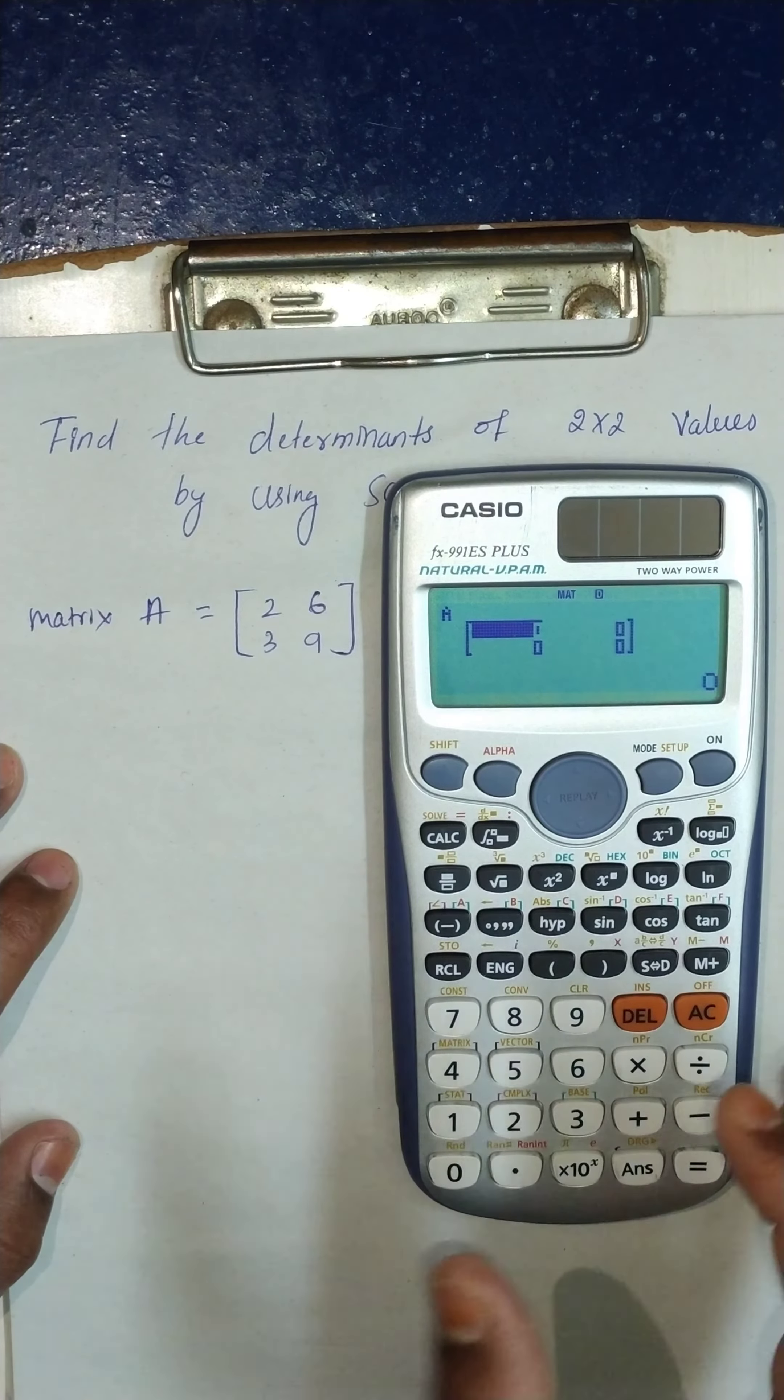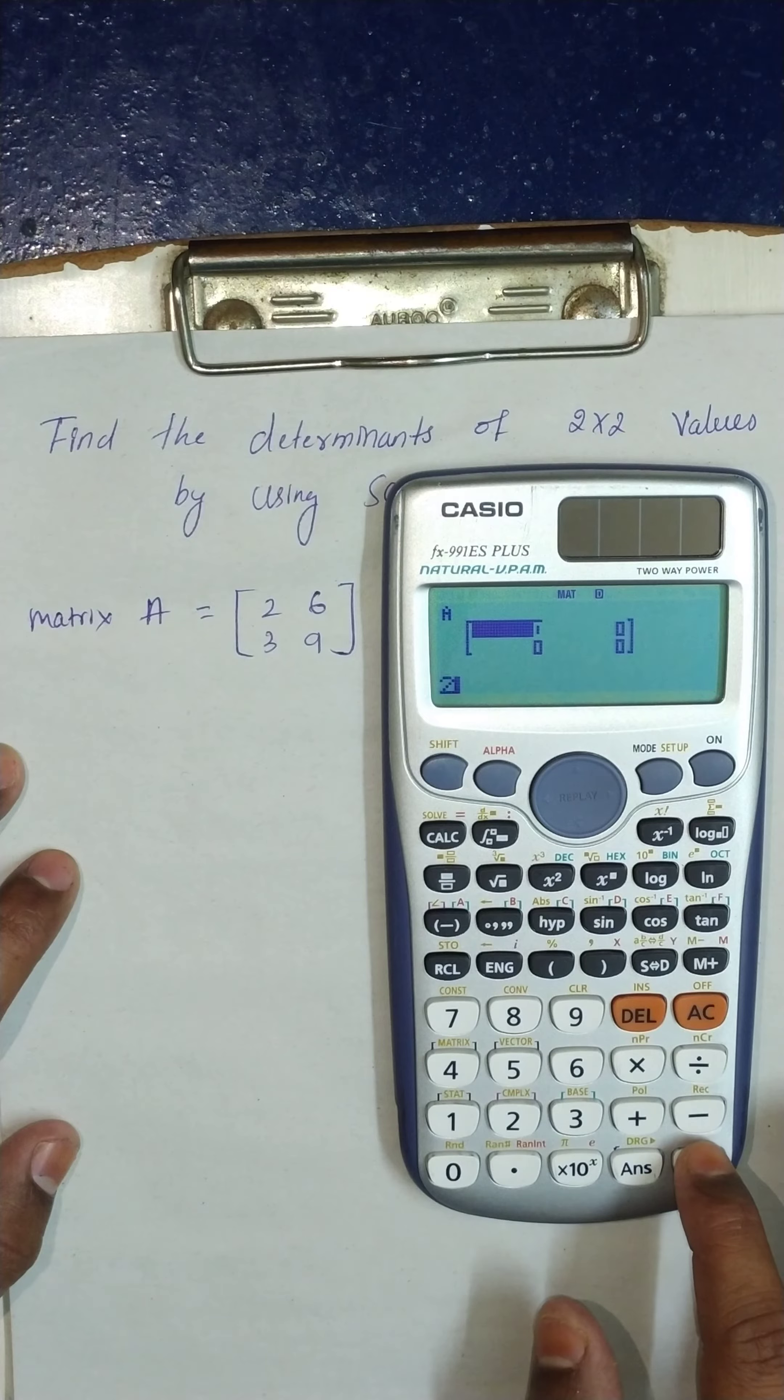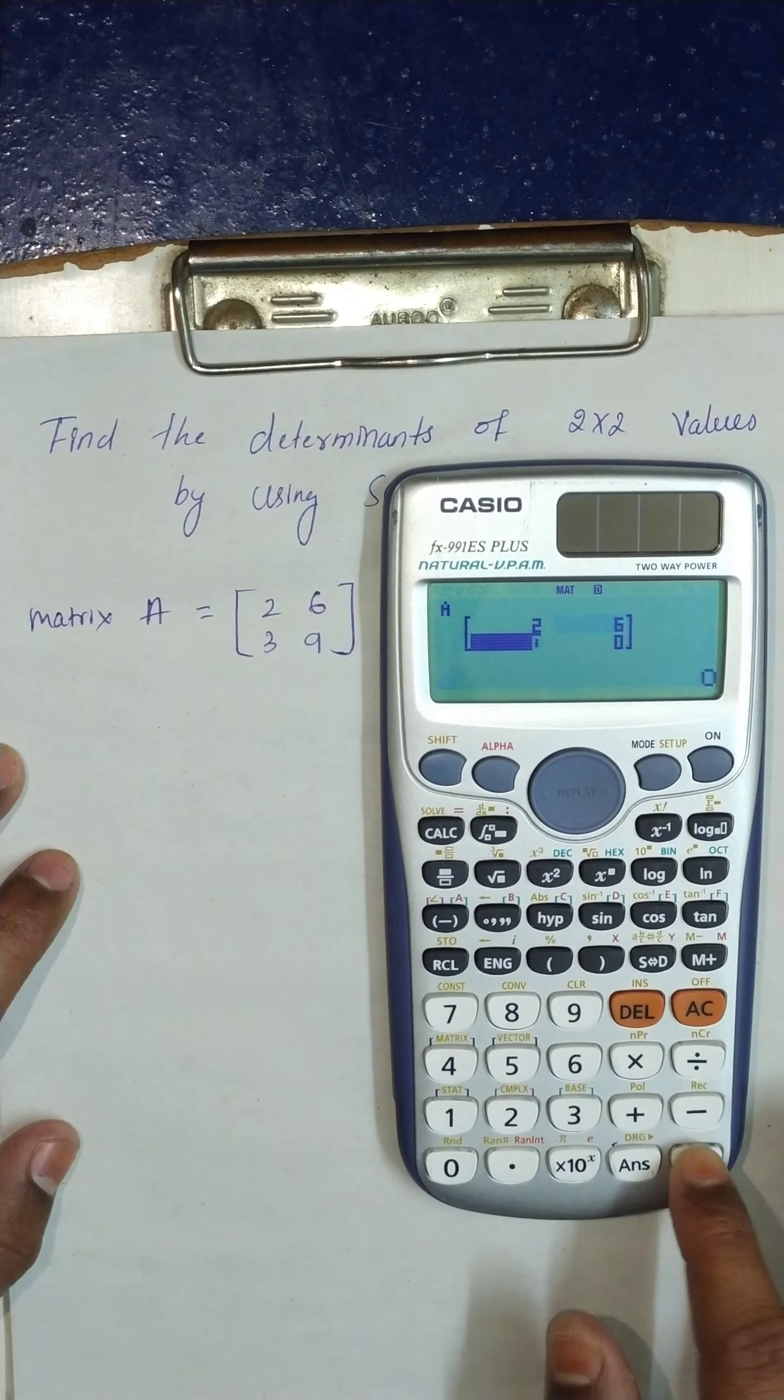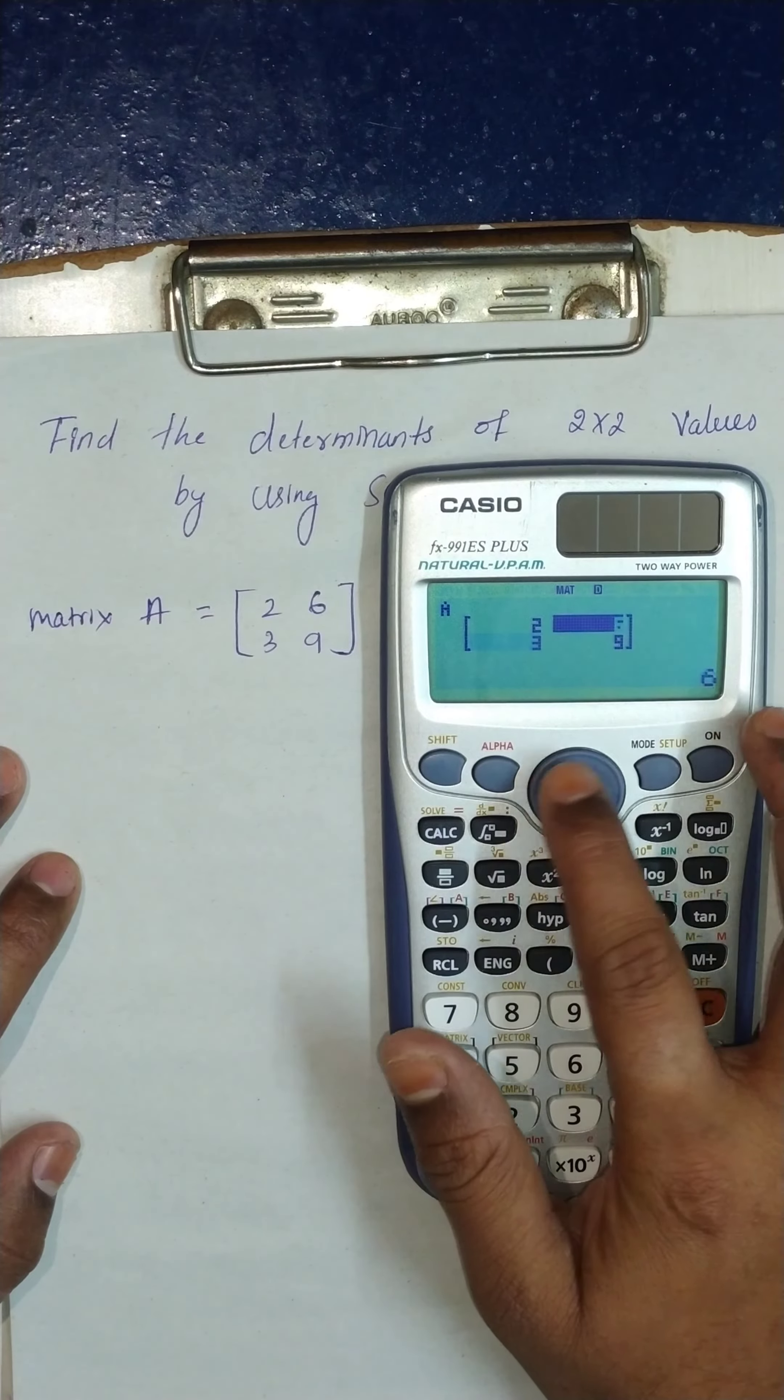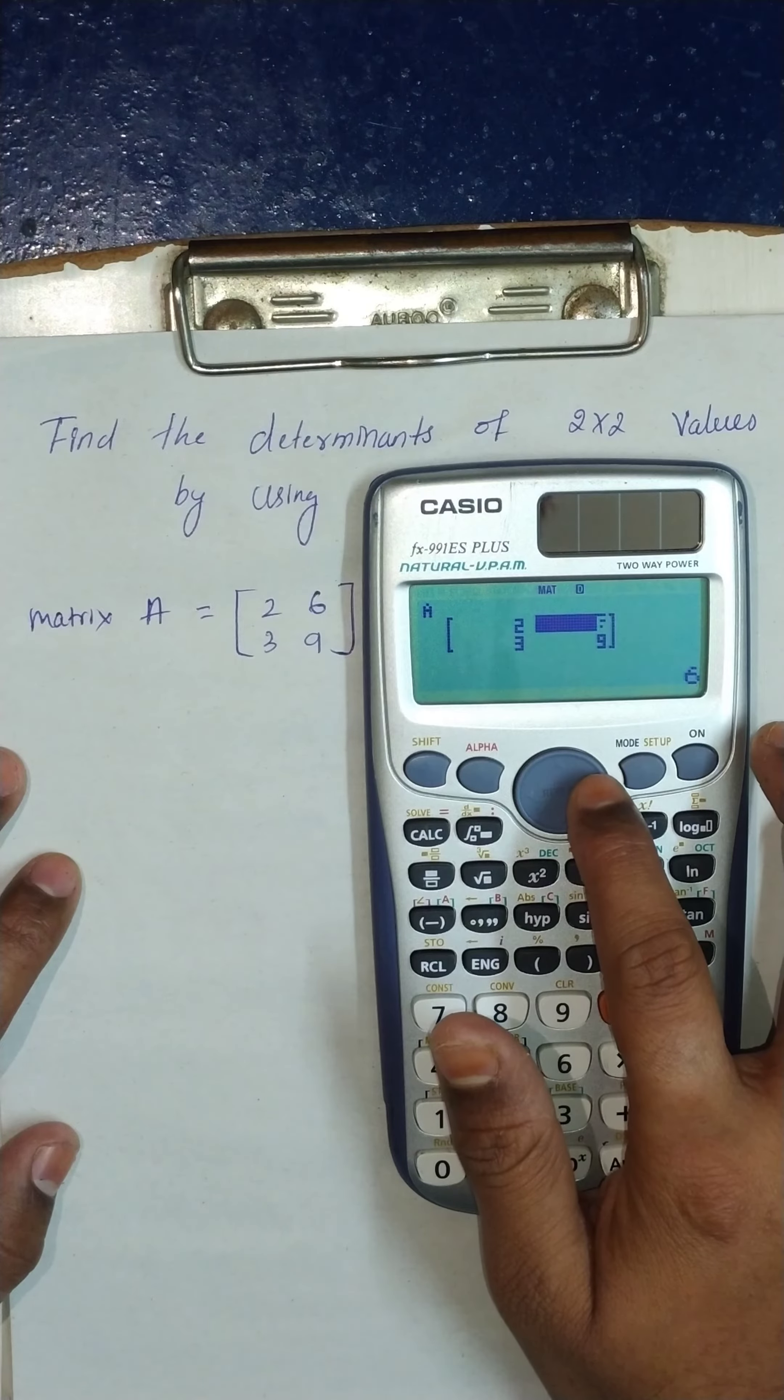Now enter the matrix values: 2, 6, 3, and 9. Let's recheck the values you have entered: 2, 6, 3, 9.